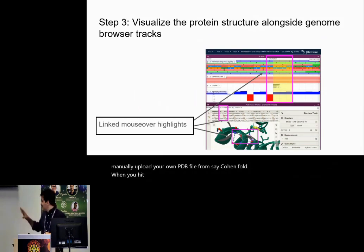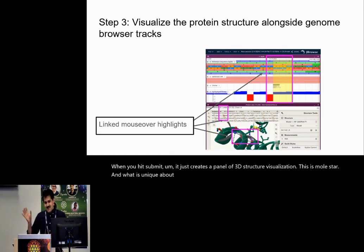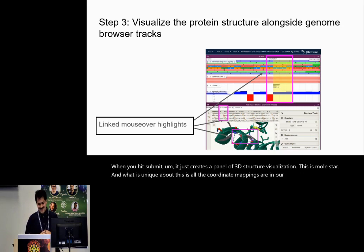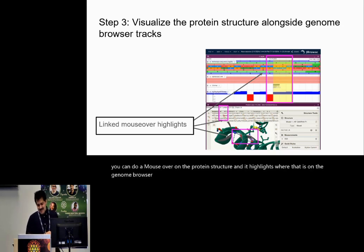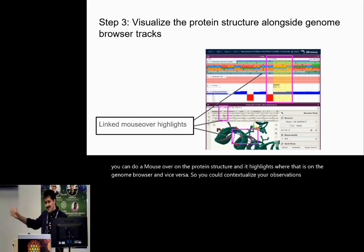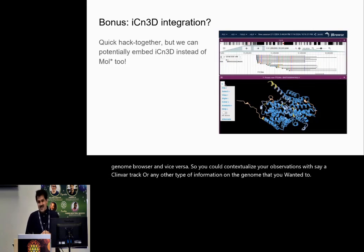When you hit submit, it creates a panel of 3D structure visualization — this is Mol* (Mol Star). What is unique about this is that all the coordinate mappings are in our system, so you can do a mouseover on the protein structure and it highlights where that is on the genome browser, and vice versa. So you can contextualize your observations with, say, a ClinVar track or any other type of information on the genome.